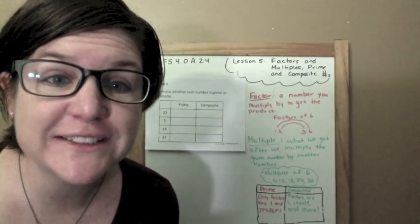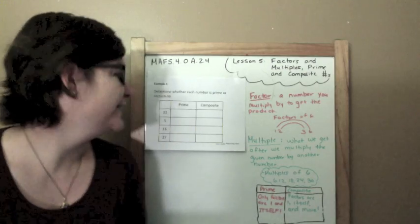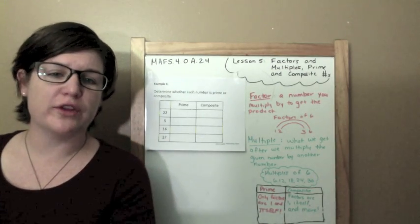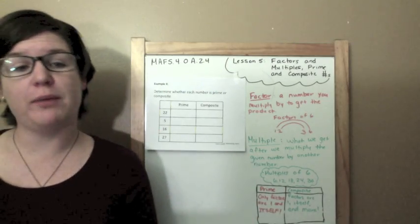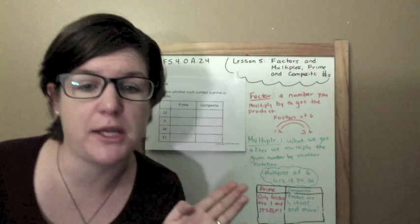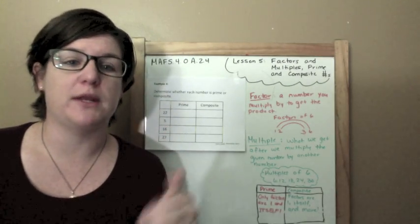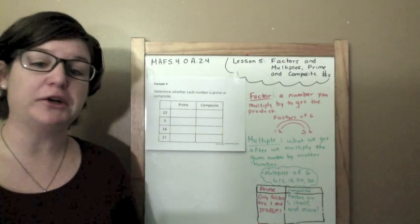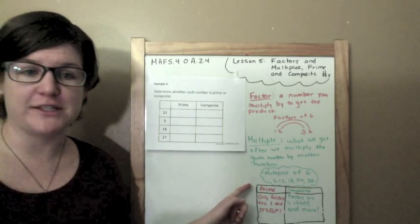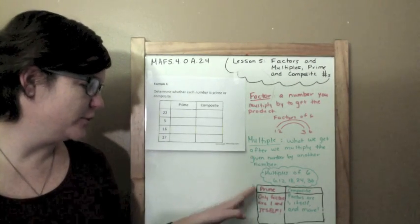Okay, here is Example 4. This is a matching item type. It says, Determine whether each number is Prime or Composite. Ms. McCarthy, what does Prime and Composite mean? I can never remember what it means. Alright, well we have a fancy little chart here, so you may want to record this. It's not really that fancy. Don't mean to offend you, chart.